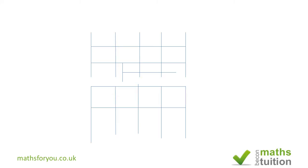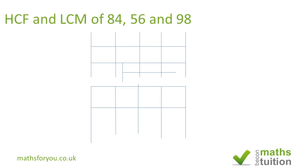Hello, I've been asked to have a go at this exercise here, and we're supposed to find the HCF and LCM of 84, 56, and 98. In the States, these will be referred to as the GCF — greatest common factor — and lowest common denominator.